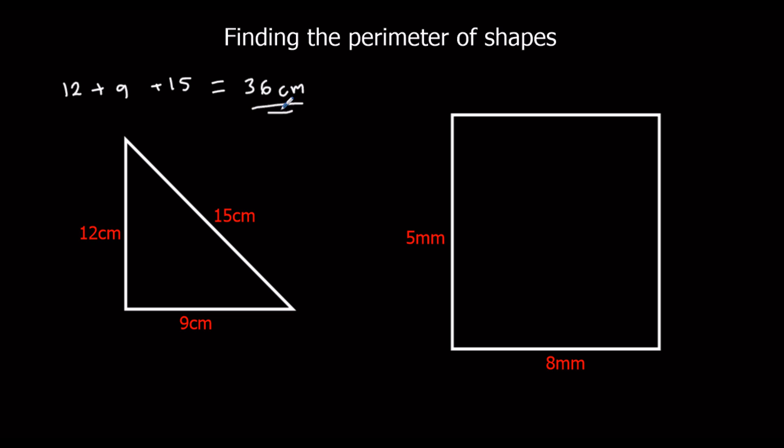Here we've got 5, 5, 8, and 8. So we've got 8 plus 5, that's 8 plus 5, so we've got 8 plus 5, which is 13, plus another 13, so that's 26 millimeters.